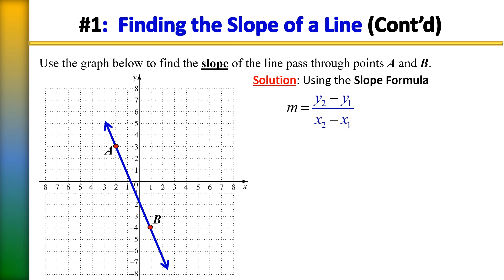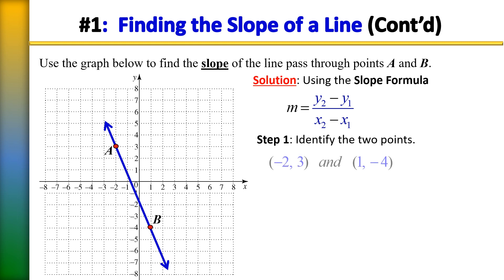Step one is to identify the two points on the line. Point A is at negative 2, 3 — that is correct. And point B is at 1, negative 4. So now we can go ahead and plug these two points into the slope formula.